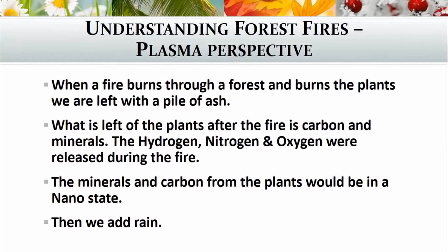When a fire burns through a forest and starts burning your trees and plants, we're left with a pile of ash. What is left of the plants after the fire is your carbon and your minerals, because your hydrogen, nitrogen, and oxygen were all burnt off and released during the fire. So you're left with the minerals and the carbon from the plants, and these would be in a nano state on the ground as your ash.